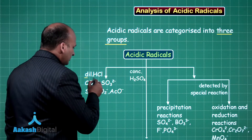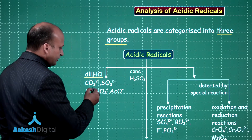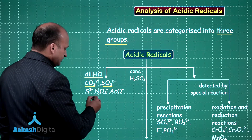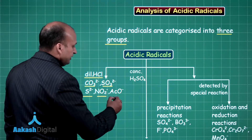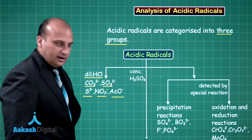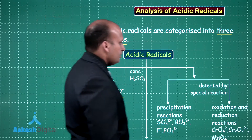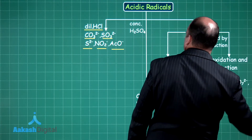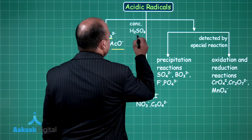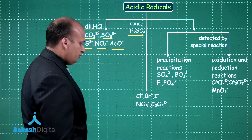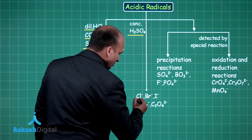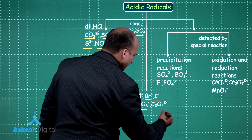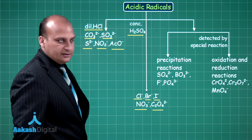In the first group, where we are using dilute HCl as the reagent, we have carbonate, sulfide, nitrite, and acetate ions. Then we have the group where we are using concentrated H2SO4 — used for chloride, bromide, iodide, nitrate, and oxalate radicals.